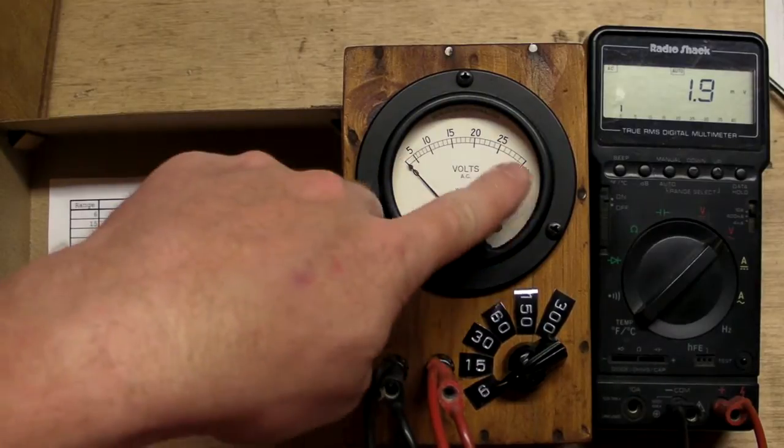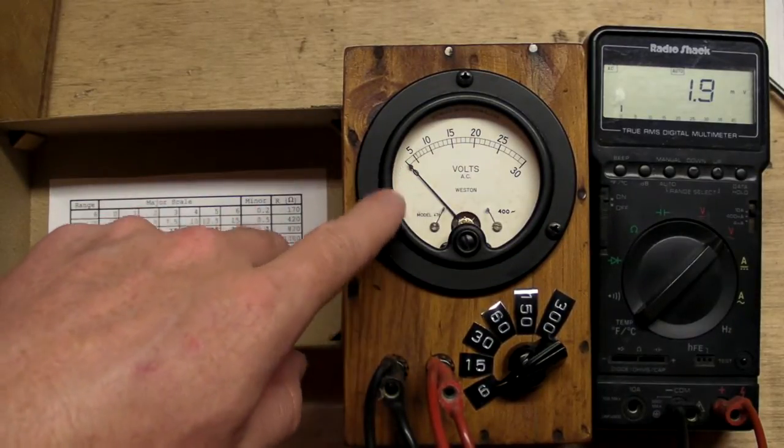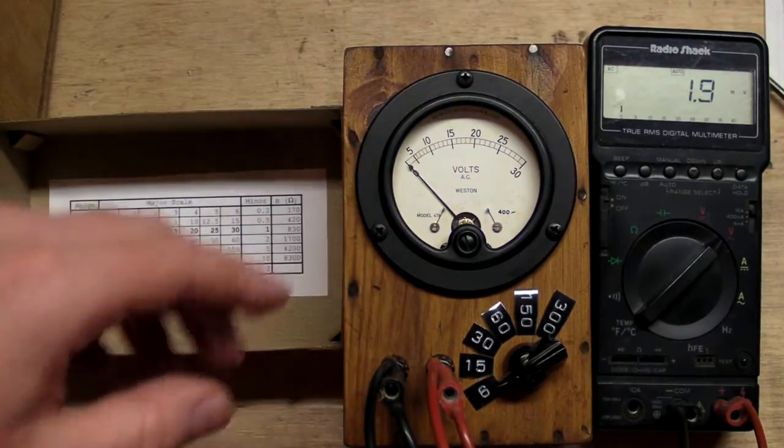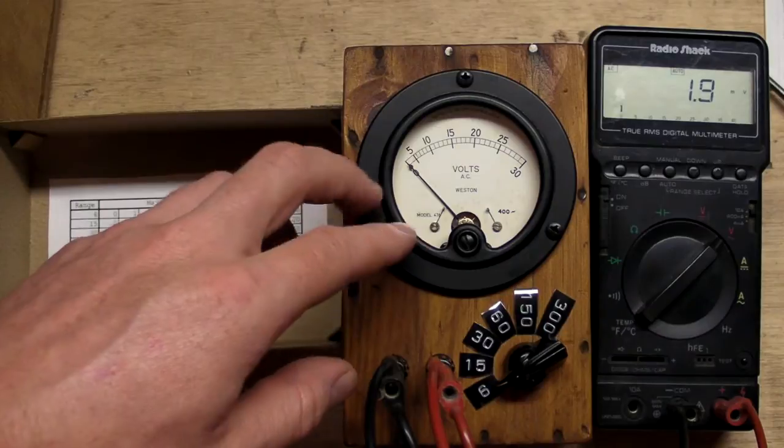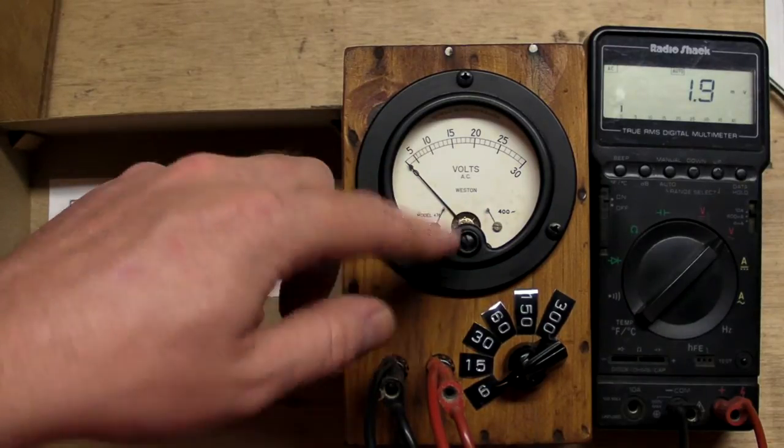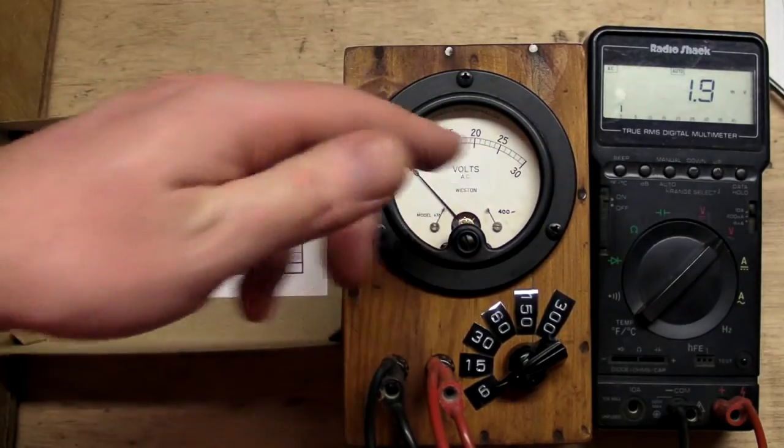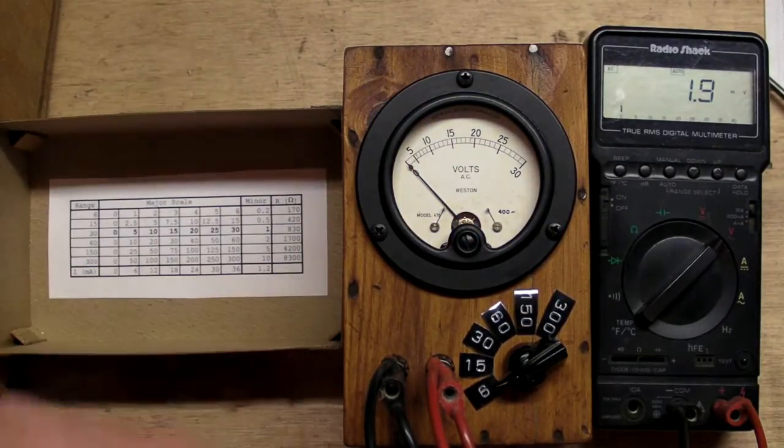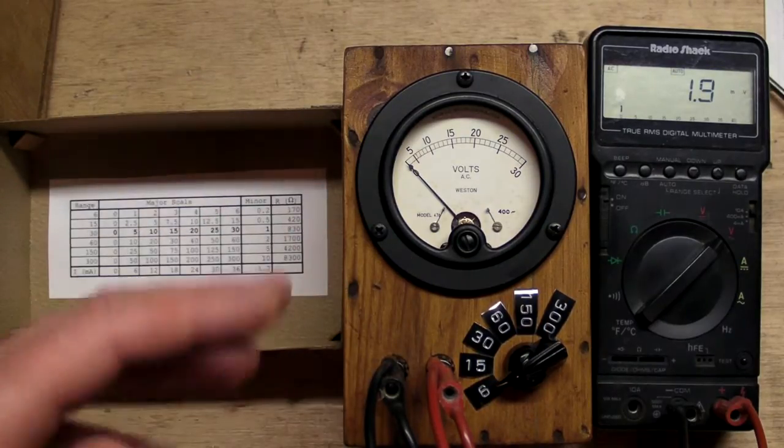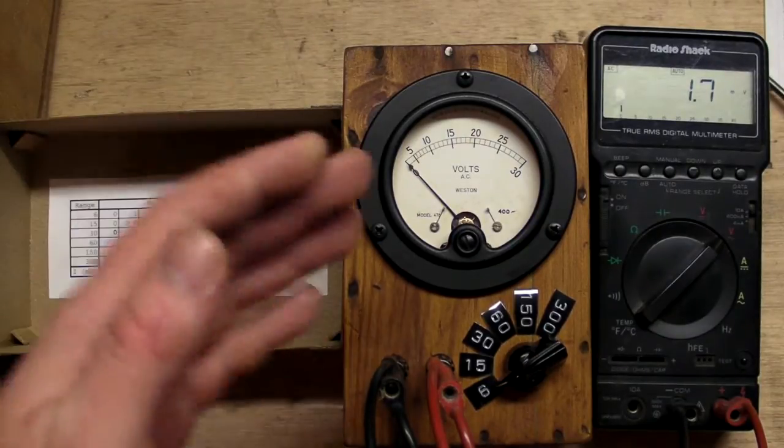By the way, the reason for the non-linearity of the scale on the voltmeter right here, that's because this is not your standard DC D'Arsonval galvanometer with the moving coil going around a permanent DC magnet. It's actually has a moving iron vane inside there that gets repelled by another piece of iron, and it takes a certain amount of current going through the coil in order to magnetize the two pieces of iron to make them repel apart.